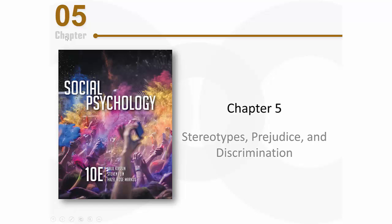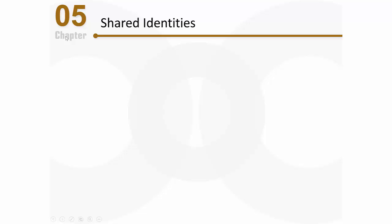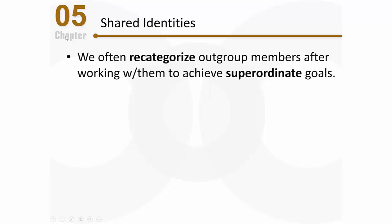Let's continue talking about stereotypes, prejudice, and discrimination. Let's wrap up this chapter by talking about a few other ways that we can reduce these problems. Let's start by talking about shared identities. We often re-categorize out-group members after working with them to achieve superordinate goals — goals that can only be achieved when we cooperate with other people.